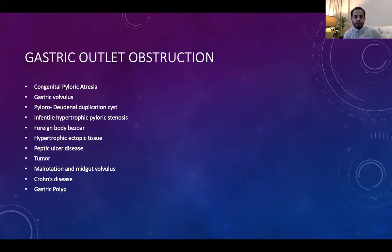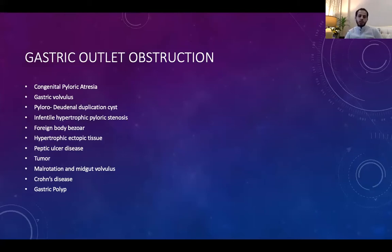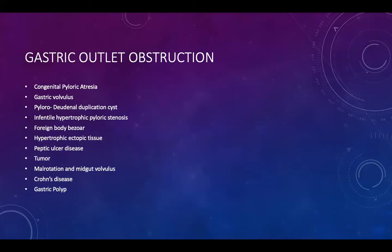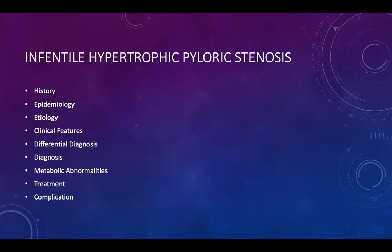Moving to the main topic — gastric outlet obstruction — we can differentiate causes into congenital or acquired, or classify them by the age of the baby. We will cover congenital pyloric atresia, infantile hypertrophic pyloric stenosis in detail, and the remaining causes more briefly. We'll start with the most common: pyloric stenosis.